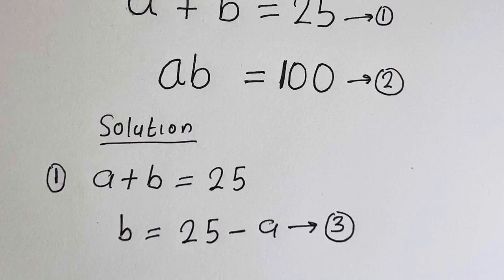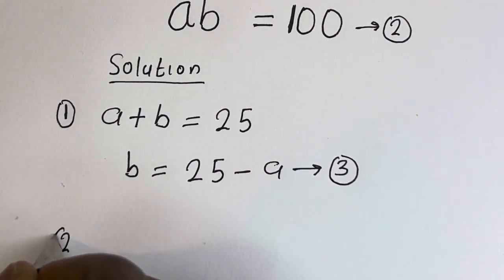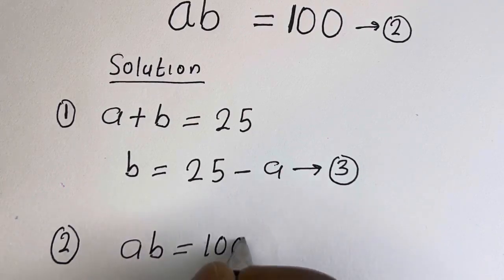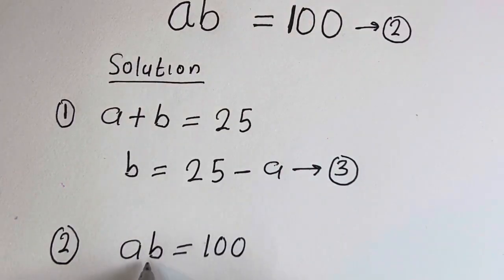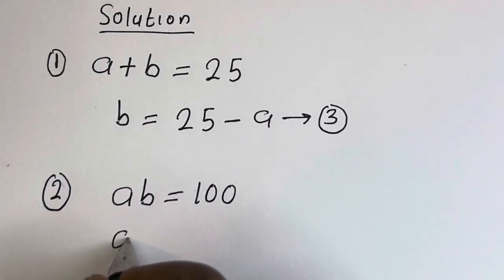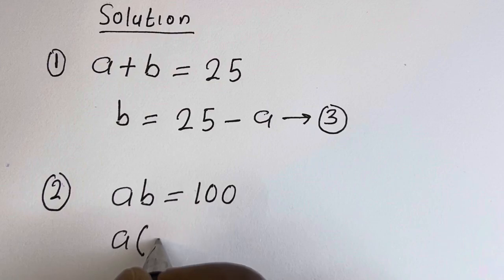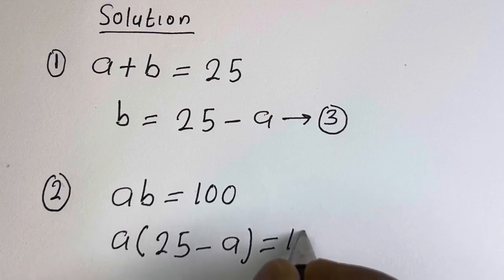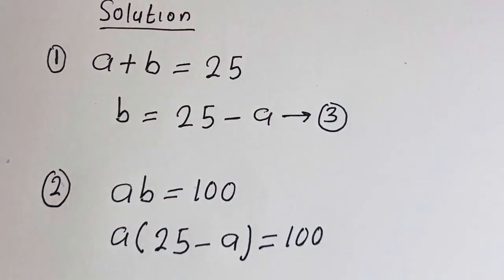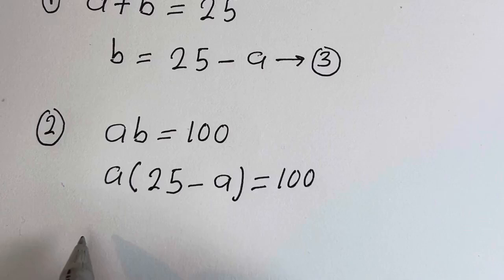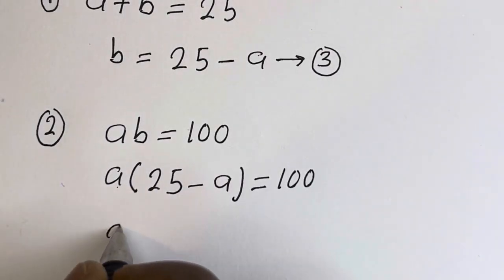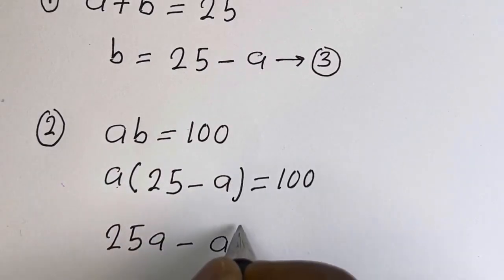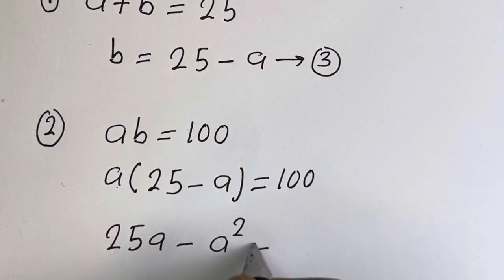Also from equation 2, AB is equal to 100. We can now substitute for B. We have A times (25 minus A) is equal to 100. Expanding: A multiplied by 25 is 25A, minus A multiplied by A, giving A squared, equals 100.